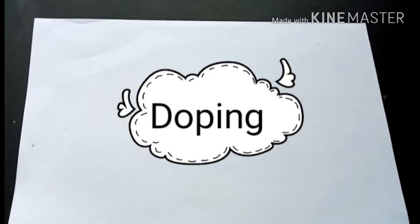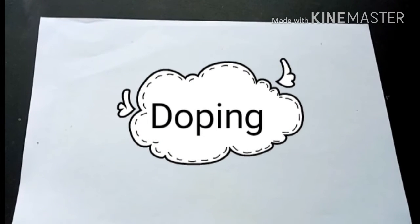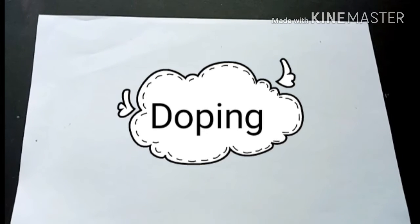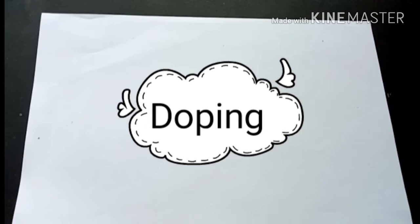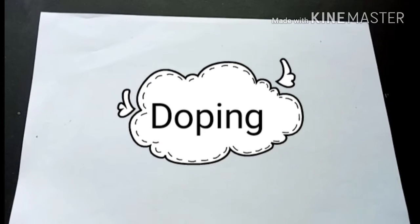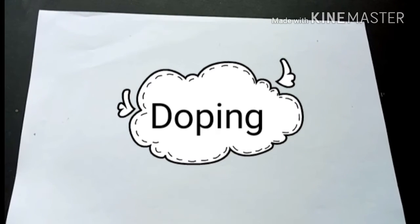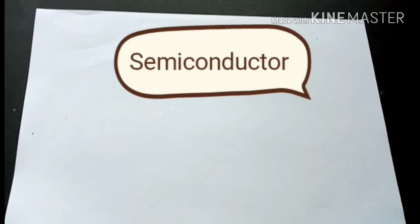In semiconductor production, doping is the intentional introduction of impurities into an intrinsic semiconductor for the purpose of modulating its electrical properties. There are two types of semiconductors, which are P-type and N-type.